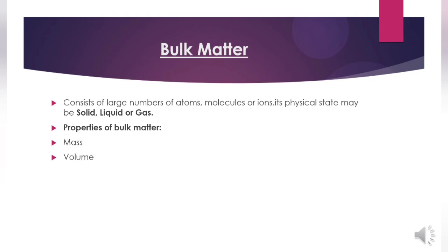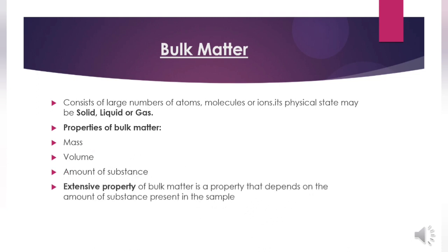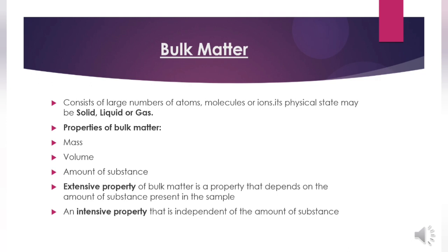The state of a bulk sample of matter is defined by specifying values of various properties, among them mass, volume, and amount of substance. Amount of substance is a measure of the number of specified entities present in a sample. The number of entities per mole is called Avogadro's constant, with a currently accepted value of 6.022 × 10²³ per mole. The molar mass of a substance is the mass per mole of its atoms, molecules, or formula units. Amount of substance n equals mass m divided by molar mass M.